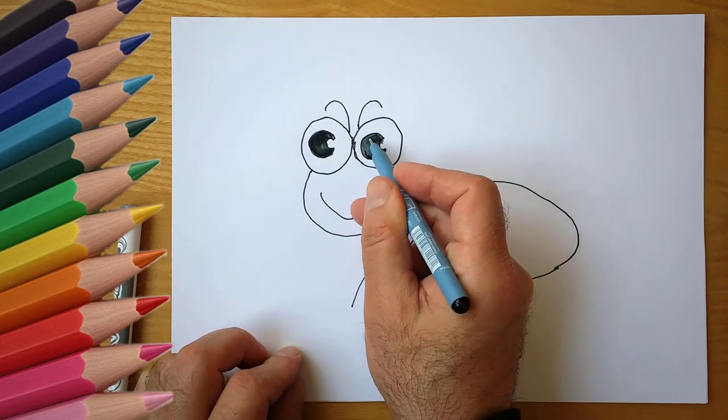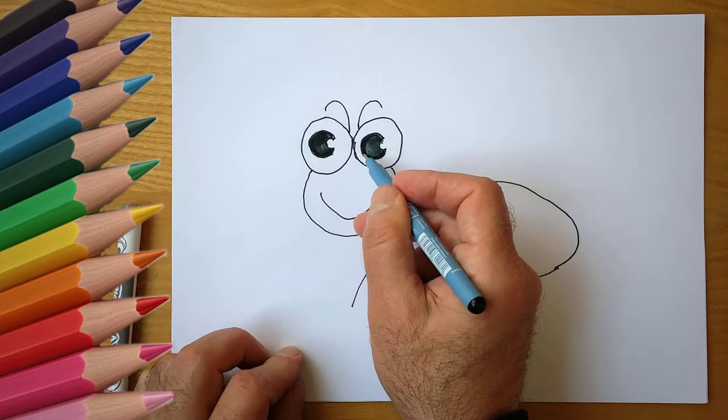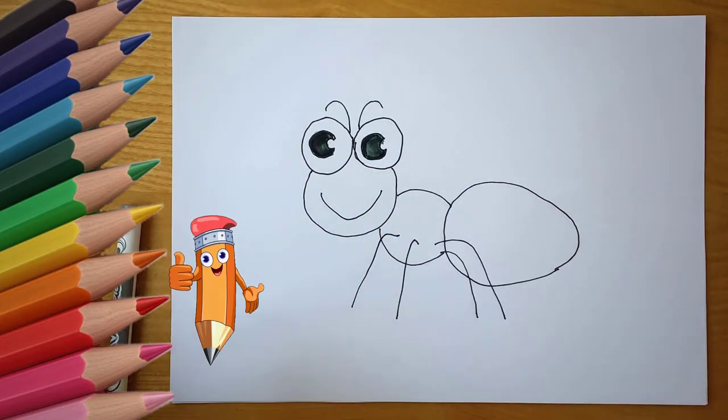Our ant has paws. Let's draw quotes to our ant. Now draw the ant in brown.